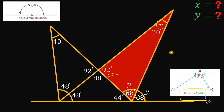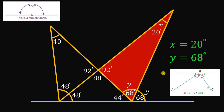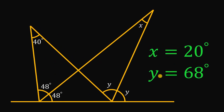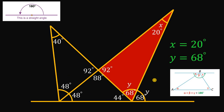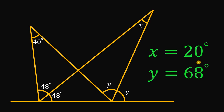Therefore, we found the value of Y, which is 68 degrees, and we also know the value of X, which is 20 degrees. That is our answer to this question. Our answer to this geometry challenge: X equals 20 degrees and Y equals 68 degrees.